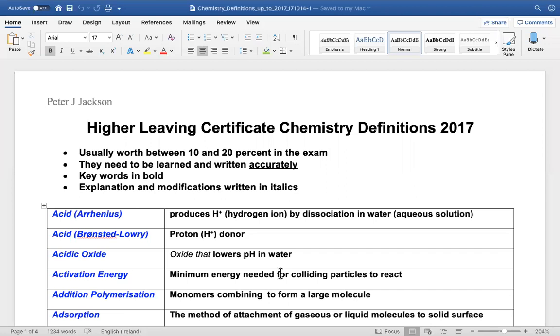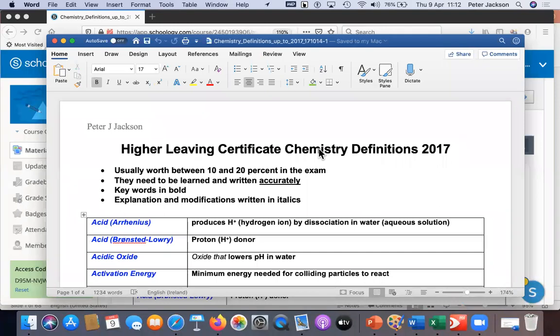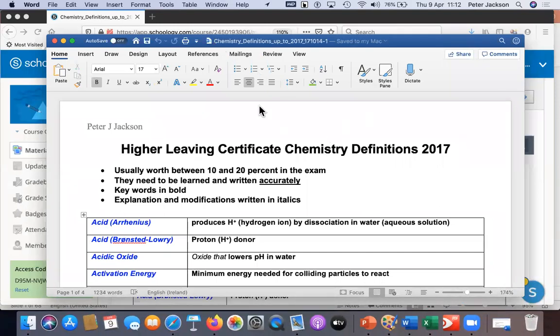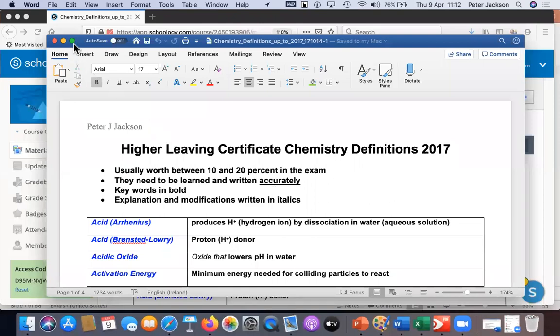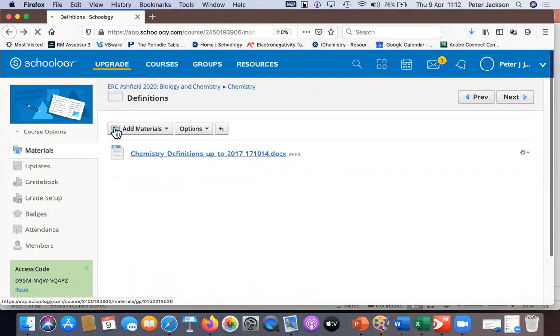If you look at these four pages, on those four pages is a pretty much guaranteed 20% in the exam, somewhere between 10 and 20%. The key words required are in bold and any explanations or modifications are written in italics. So it's quite important that you learn these. The second reason for learning these is that all the questions will use these words. And if you don't know what they mean, you won't know what the question means. Download them to your computer, save them, then you have them for your use.